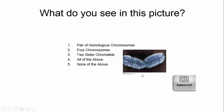It's one duplicated chromosome. When you have duplicated chromosomes like that, we say each half is called a sister chromatid. So the correct answer is three — you see two sister chromatids in this image.